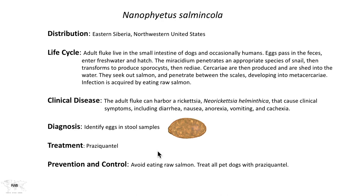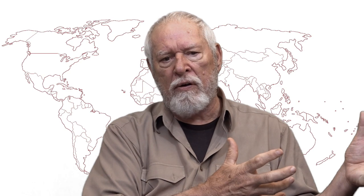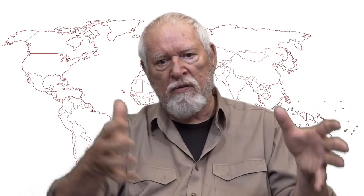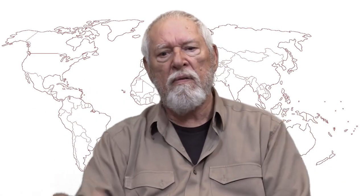Finally, Nanophyetus salmincola. This infection is only found throughout eastern Siberia, northwestern United States, and Canada. The adult lives in the small intestine of dogs and very occasionally humans. The eggs are passed in feces, enter fresh water and hatch. The miracidium penetrates an appropriate snail host and transforms to the reproductive stages inside the snail, giving birth to cercariae, which are shed into the water. There are seasons for this, obviously linked to the migratory patterns of various salmon species — there are five different major salmon species in the American Northwest, coming into rivers at various times during summer and fall months. They could encounter the cercariae at that time.